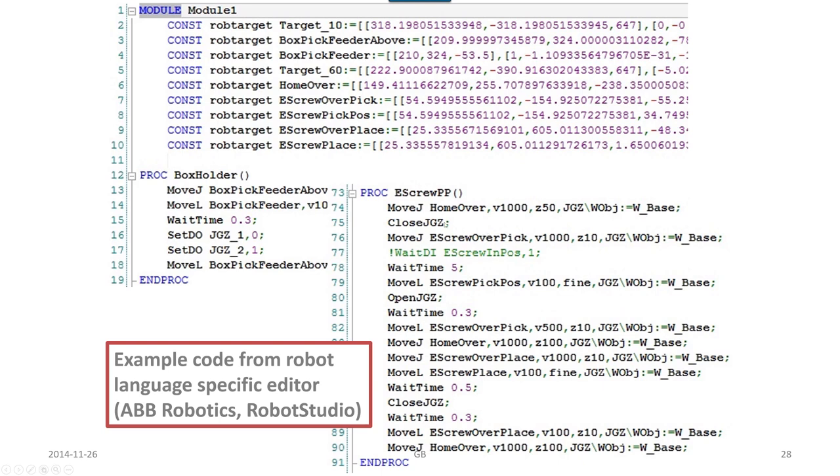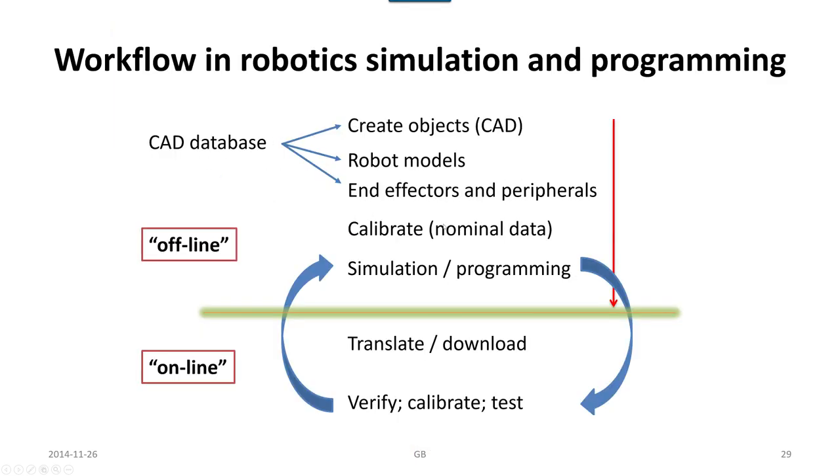These are just examples of how it can look like. The general workflow on robotic simulation and programming is typically that we create objects and put it into place to create a robot system which should mimic the real system that we aim for.